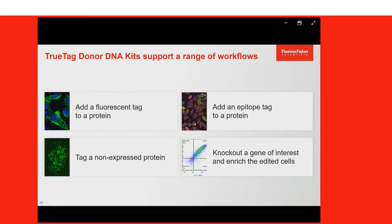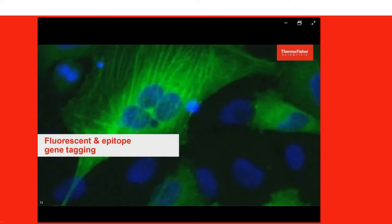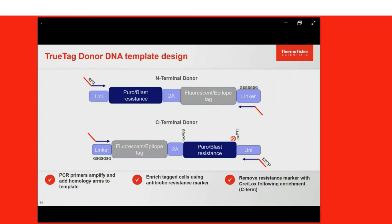Now I'll take you through the different applications and kits, starting with our kits for fluorescent and epitope gene tagging. The fluorescent or epitope tag templates provided in the TrueTag kits offer the option to knock in at either the N or the C terminus of your gene — generally the C terminus is recommended so as to not interfere with native gene regulators, though N-terminal tagging has also been successful. Since each knock-in is unique to your gene of interest, you need to provide primers to amplify the donor while adding the specific homology arms for HDR repair — that's where the TrueDesign software comes in.